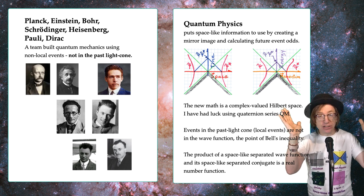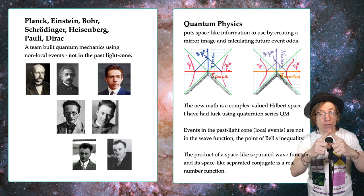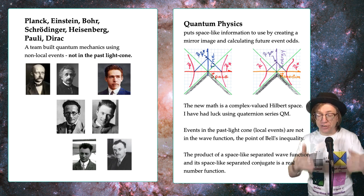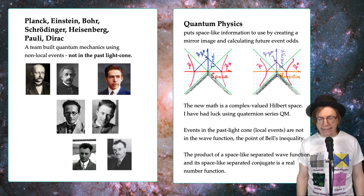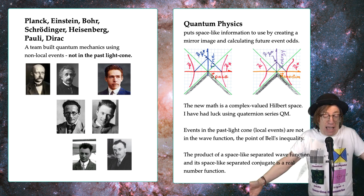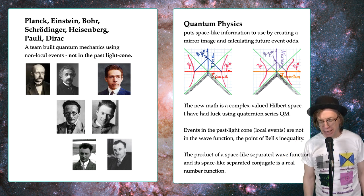And then when you take the product of these two, you always necessarily get a real number. That's in the future. And those are the odds that you're going to see an event. So that's a kind of new interpretation of what quantum mechanics is.